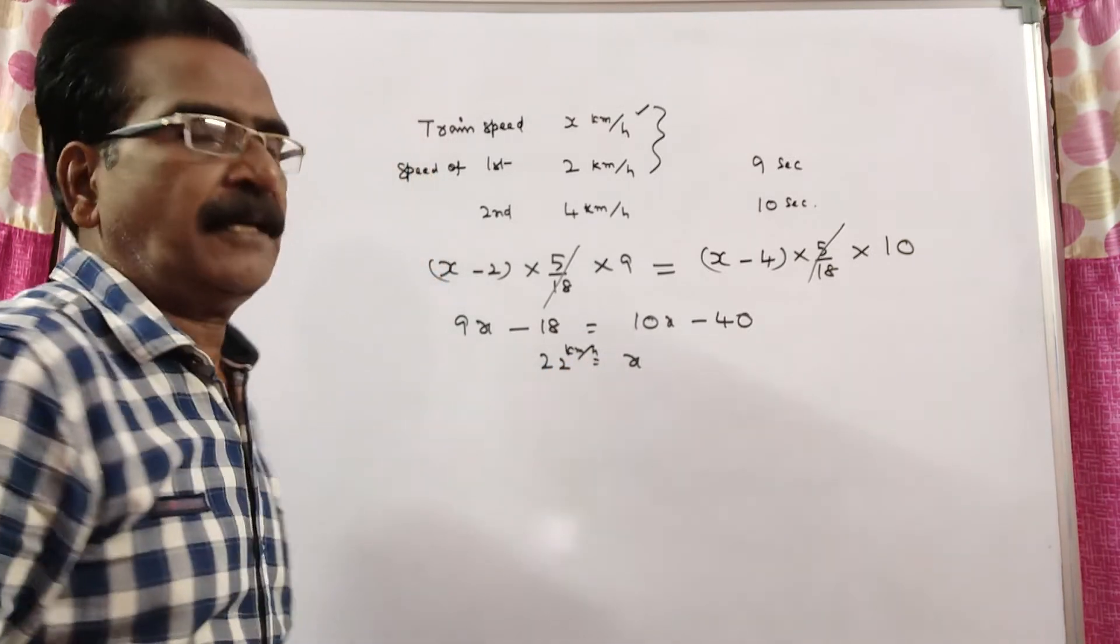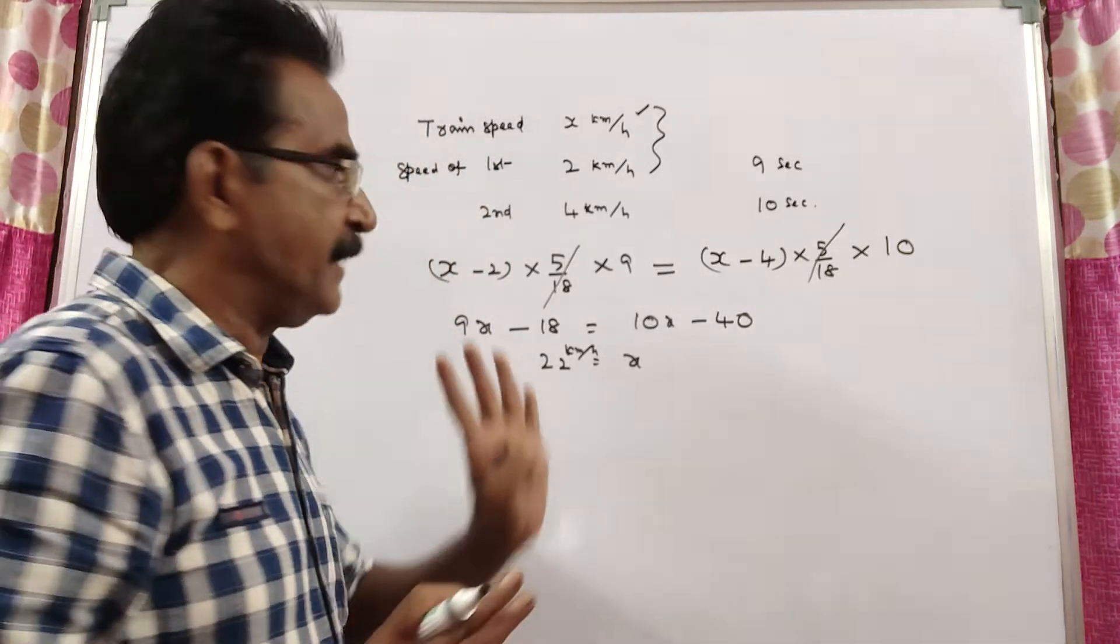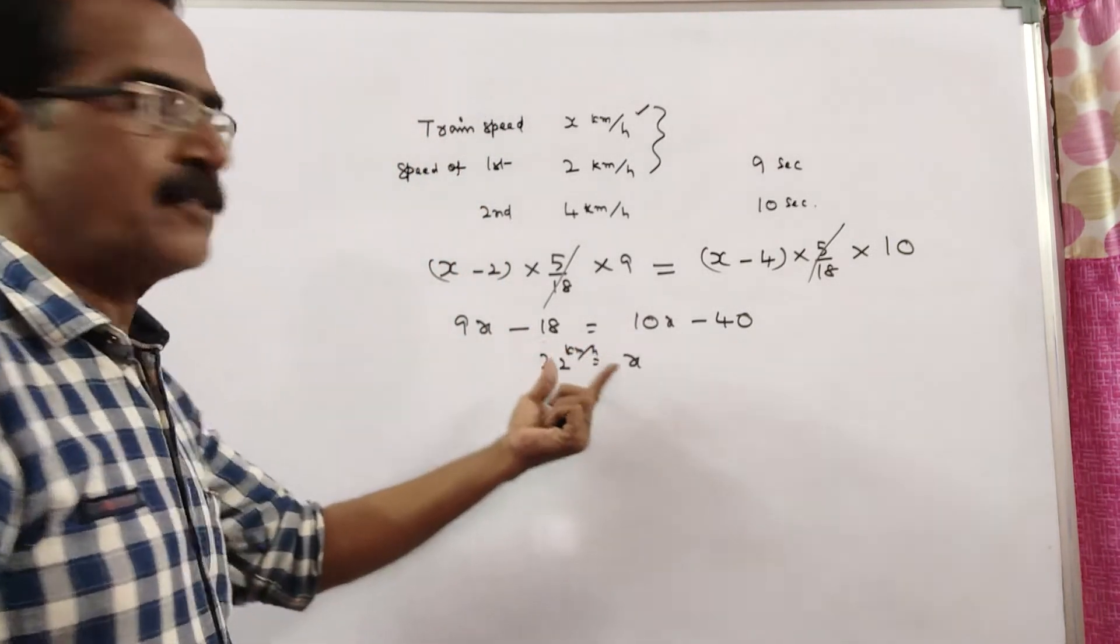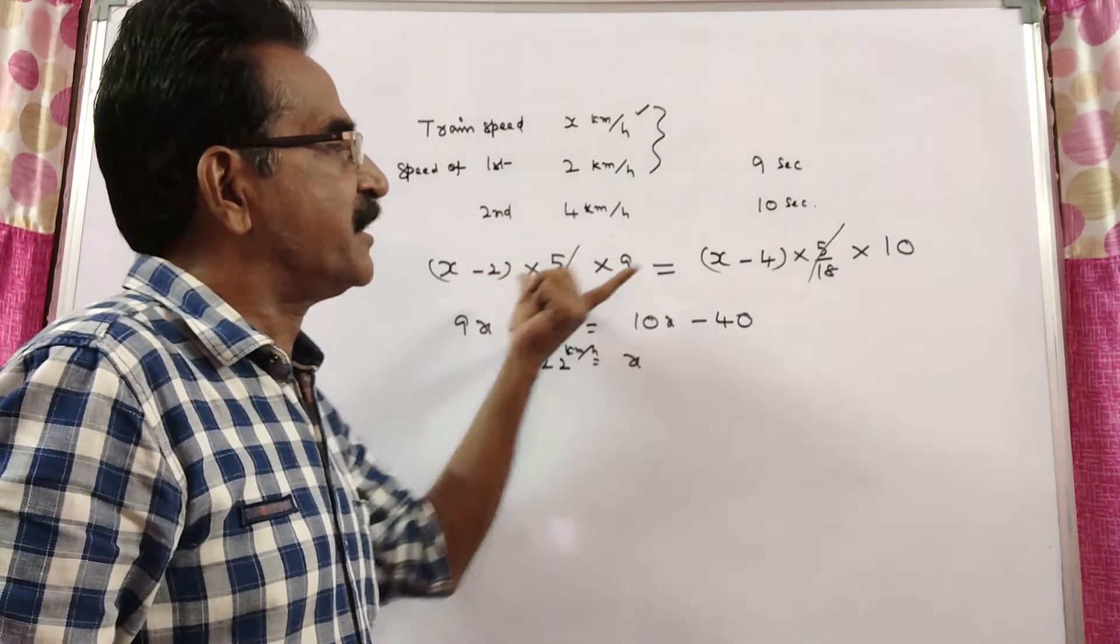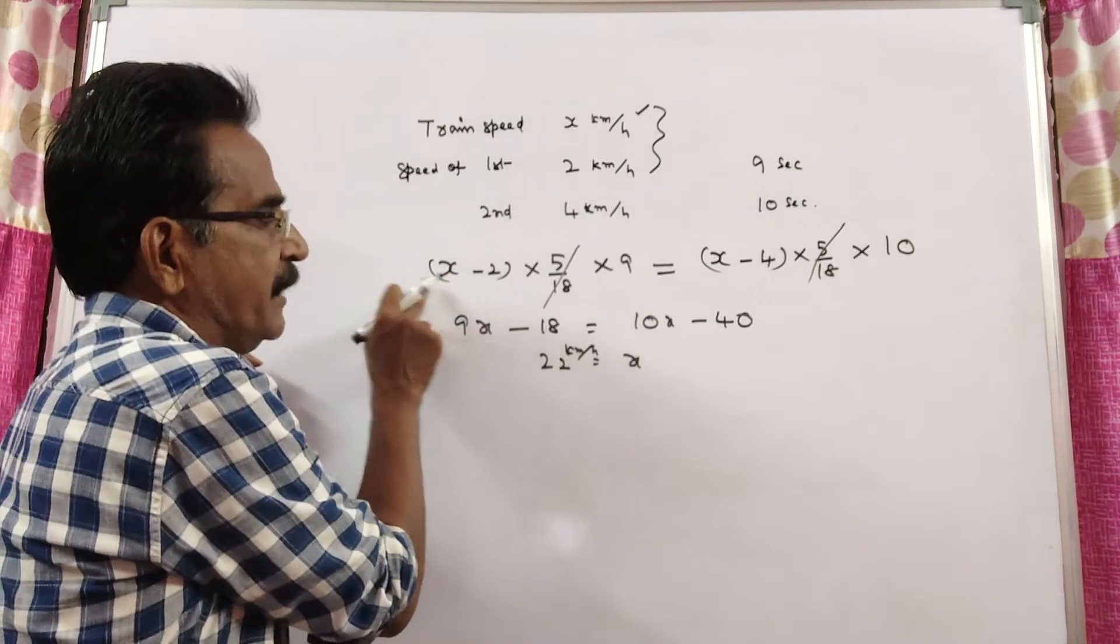Friends, the speed of the train is 22 kmph. Now, let us find the length of the train. You can substitute this x-value either in this equation or in this equation. I am substituting in this equation.